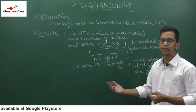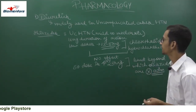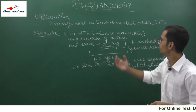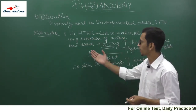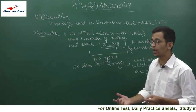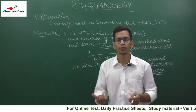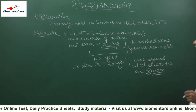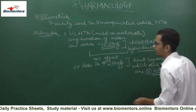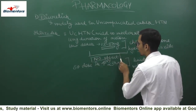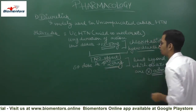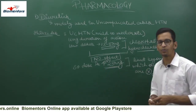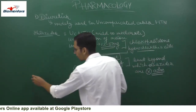So to summarize: diuretics are widely used in all uncomplicated cases. Thiazides are used in uncomplicated hypertension of mild to moderate severity, they have a long duration of action, and are given at a low dose of 12.5 mg. We have chlorthalidone and hydrochlorothiazide. When 12.5 mg has no effect, dose can be increased up to 25 mg, which is the maximum limit.